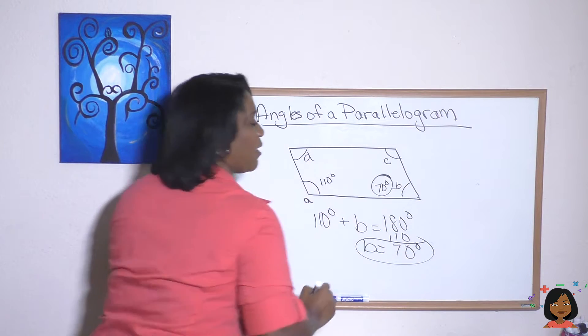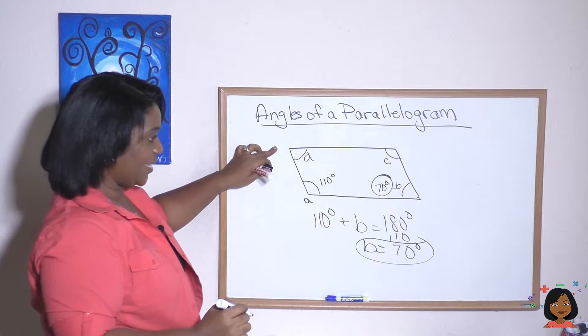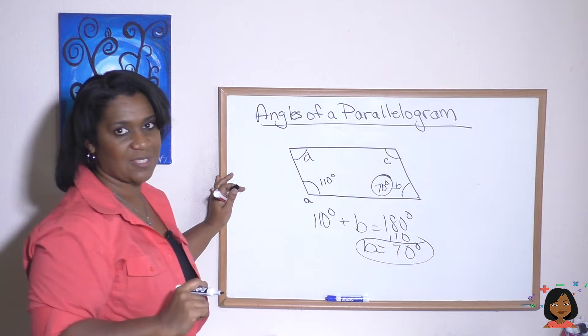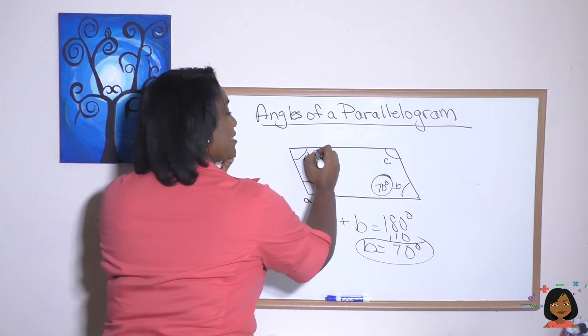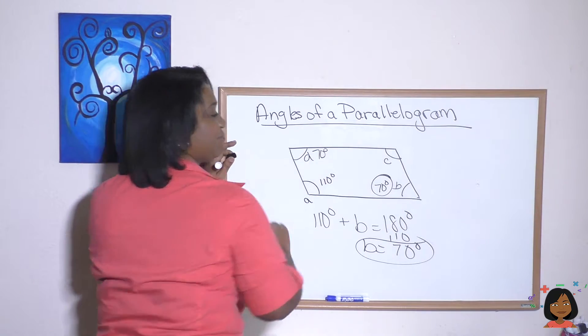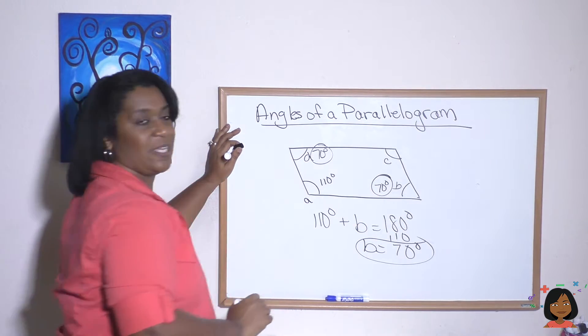But if you remember, I also said that D and A are also adjacent angles. So this means that D is also 70 degrees. So we've got 70 here and 70 here.